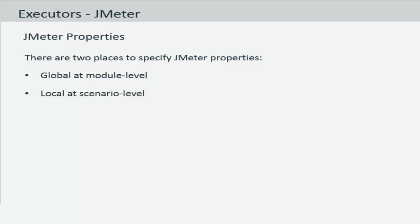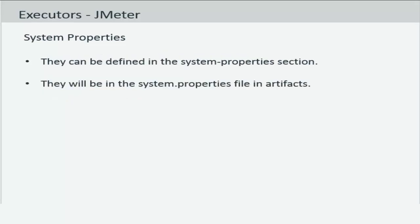Your JMeter properties can be set either globally at the module level or locally at the scenario level. The scenario properties are eventually merged into global properties and the resulting set comes as an input for JMeter. You can also specify specific system properties for JMeter in the system properties section. They will come as system properties files in the artifacts.